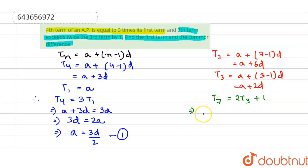Putting the values of t3 and t7, a plus 6d is equals to 2 into a plus 2d plus 1 or a plus 6d is equals to 2a plus 4d plus 1.